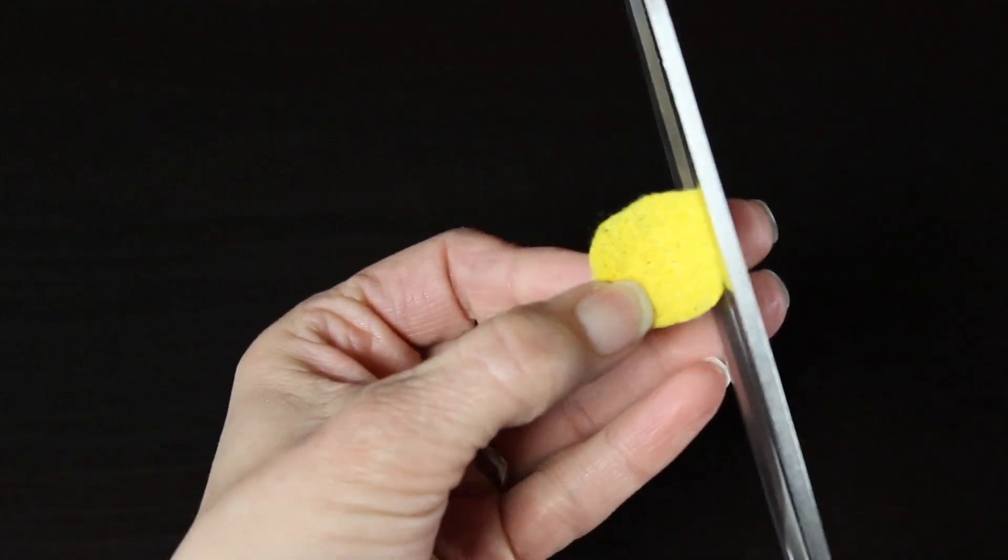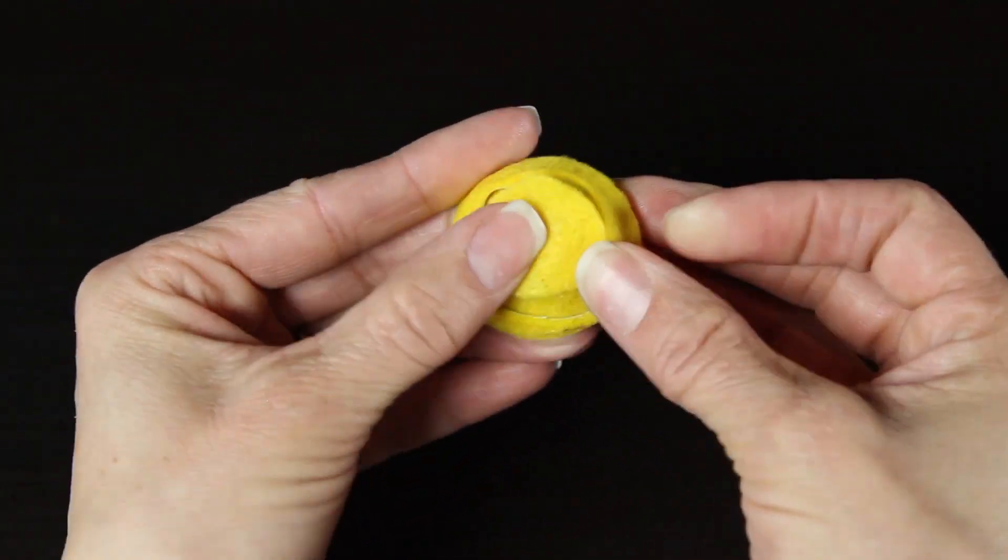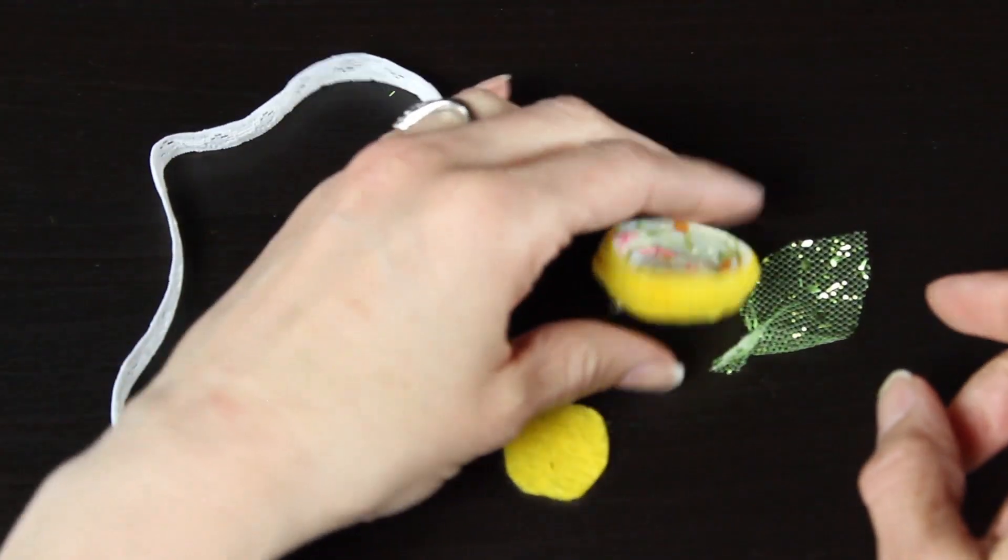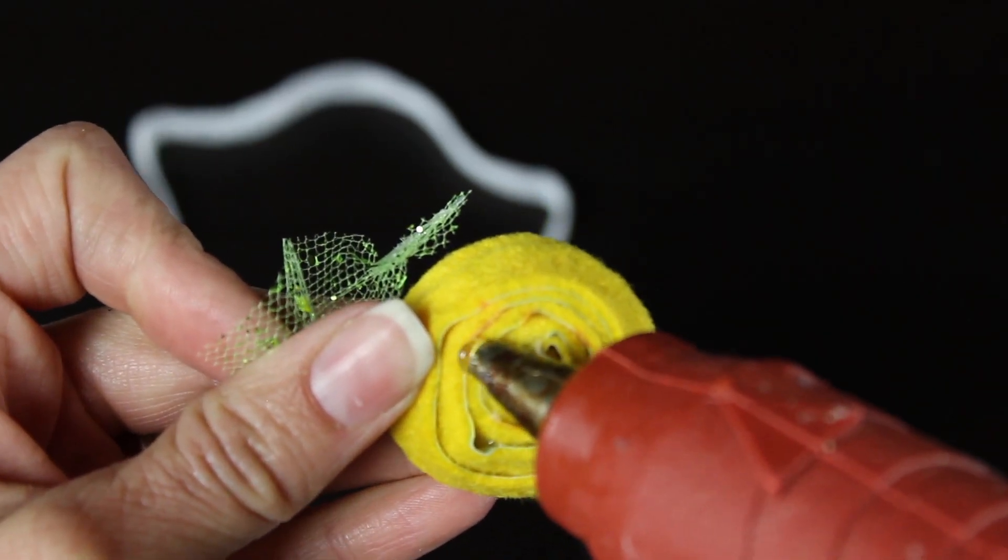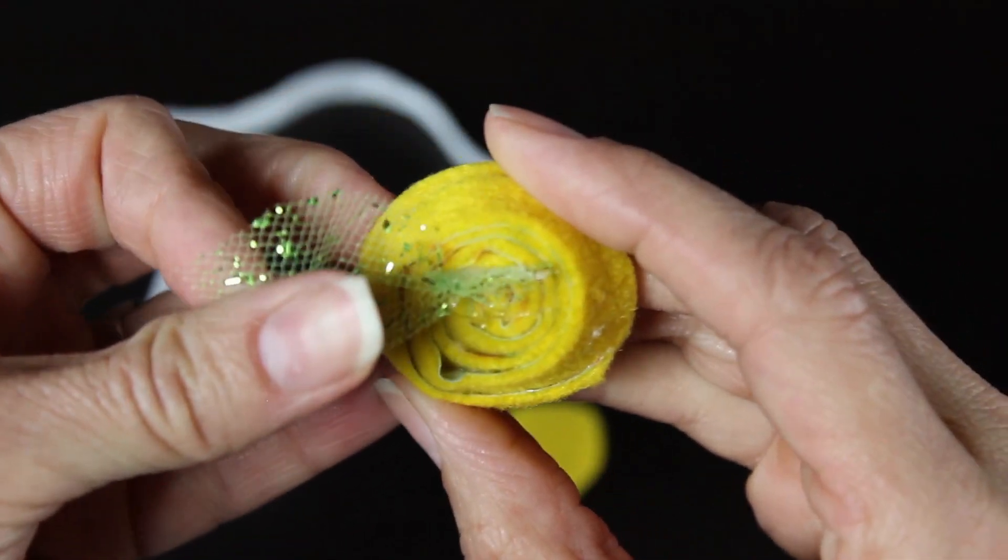You just want it to cover the back of your flower. Then grab your little rosette and flip it upside down and then you're going to put the little leaf on the back. And I just kind of decide where I want it from the front and just glue it on the back.